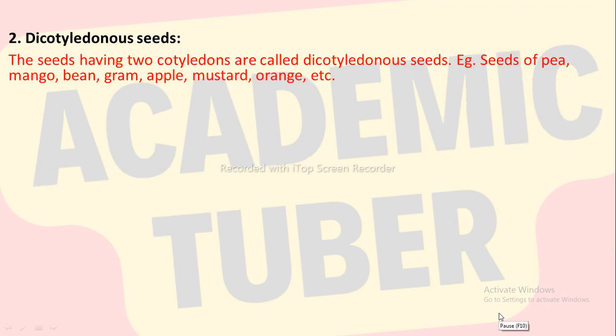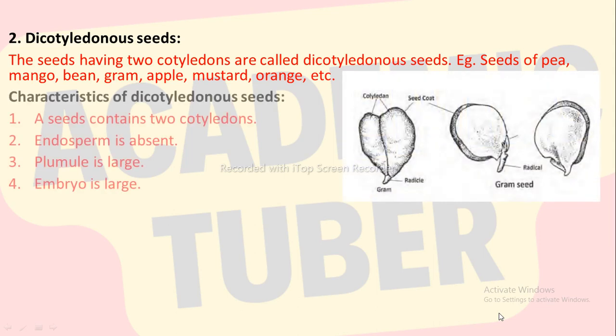Dicotyledonous seed. The seeds having two cotyledons are called dicotyledonous seeds, for example seeds of pea, mango, bean, gram, apple, mustard, orange, etc. Characteristics of dicotyledonous seed: a seed contains two cotyledons, endosperm is absent, plumule is large, and embryo is large.